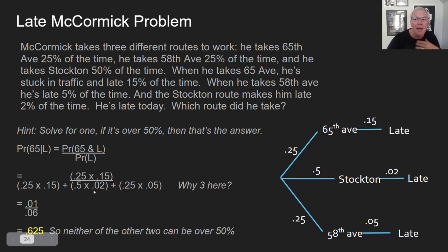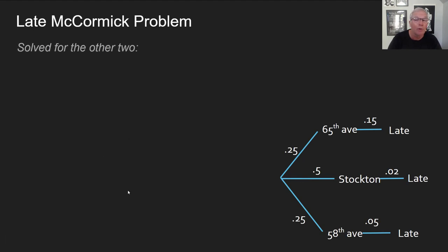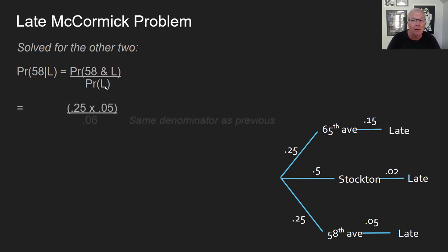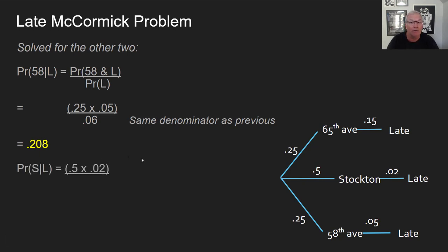Now I'm going to solve the other two problems. Note that the denominator — 0.06, which is the number you get when you add and multiply all those values — stays the same for the other two solutions. What's the probability he took 58th Avenue given that he's late? That's the numerator 0.25 times 0.05 over that same denominator, giving us 20%.